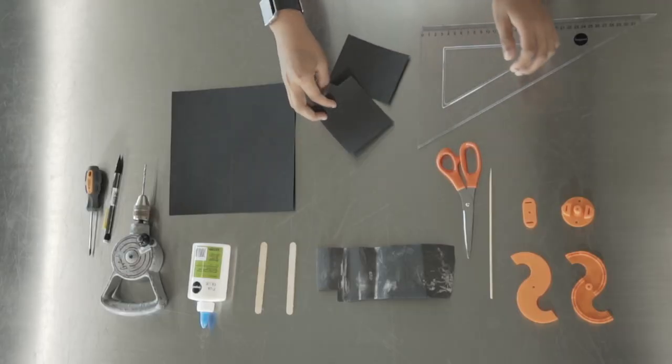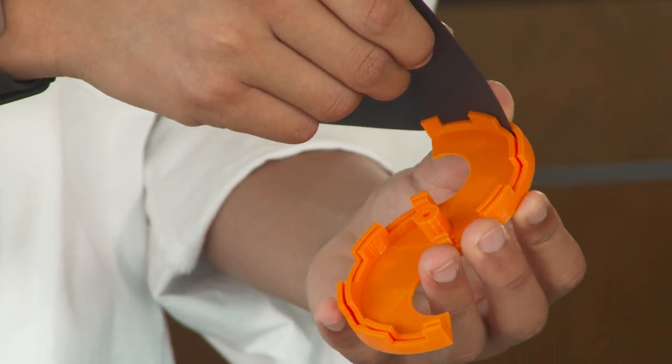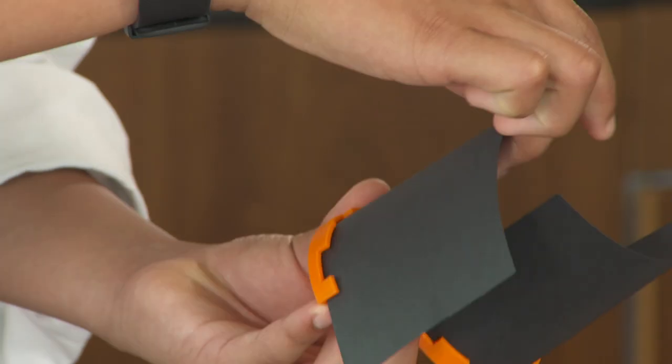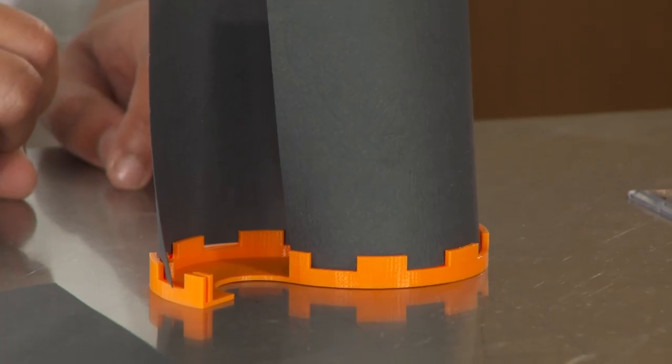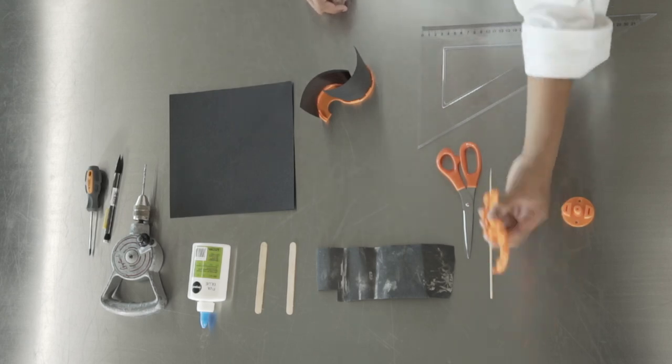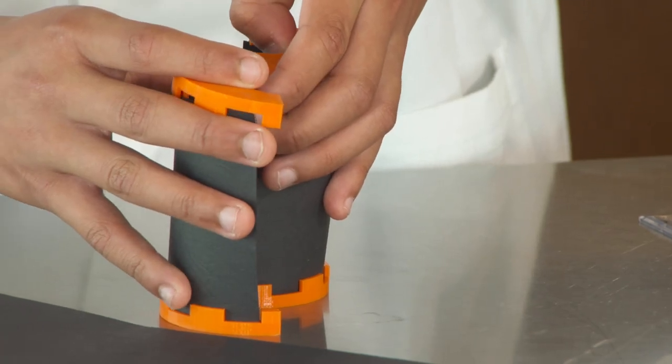Then you need to get the wind turbine floor and slide both of the pieces of paper into each semicircle. Once you have done that you want to get the wind turbine roof and slide both pieces of paper into the other semicircles.